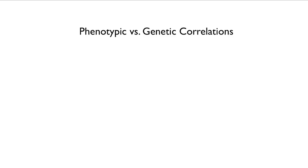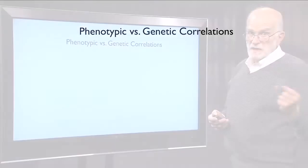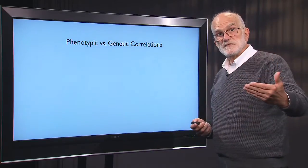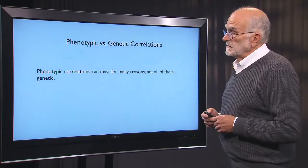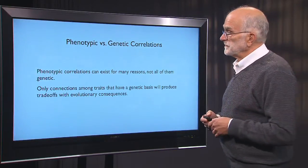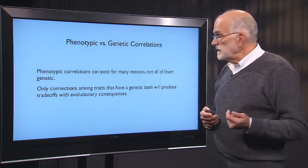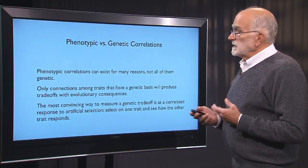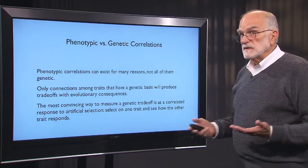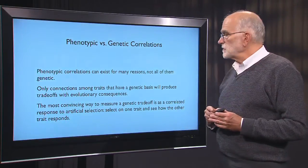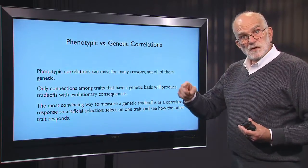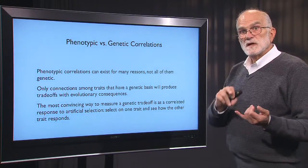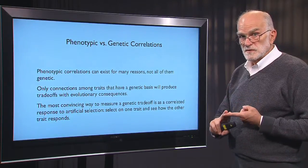What about the issue of phenotypic correlations versus genetic correlations? We might see that tall fat people have more babies and short thin people have fewer — that would be a phenotypic correlation. But phenotypic correlations can exist for many reasons, and many are not genetic; in humans especially, culture and diet play a big role. Only connections among traits that have a genetic basis will produce trade-offs with evolutionary consequences. The most convincing way to measure a genetic trade-off — which can't be done in humans — is a correlated response to artificial selection: select one trait and see how other traits respond, done over 10, 15, or 100 generations, integrating genetic response with development, plasticity, ecological interactions, and reproduction.